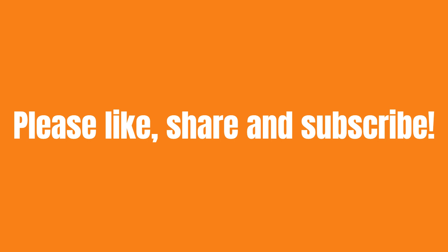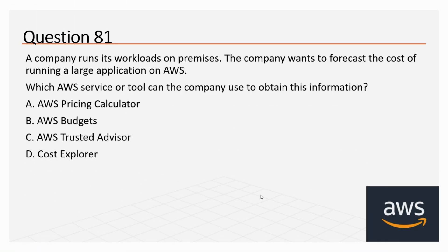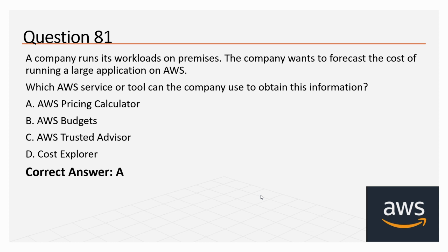Question number 81: A company runs its workload on-premises. The company wants to forecast the cost of running a large application on AWS. Which AWS service or tool can the company use to obtain this information? The options are: A. AWS Pricing Calculator, B. AWS Budgets, C. AWS Trusted Advisor, D. Cost Explorer. The correct option is A, AWS Pricing Calculator.